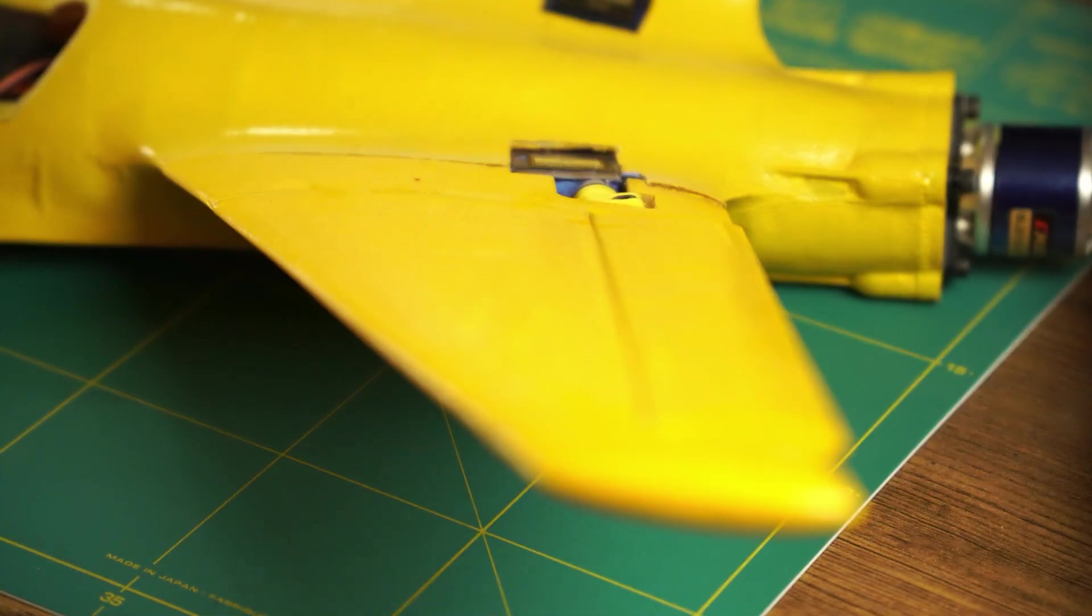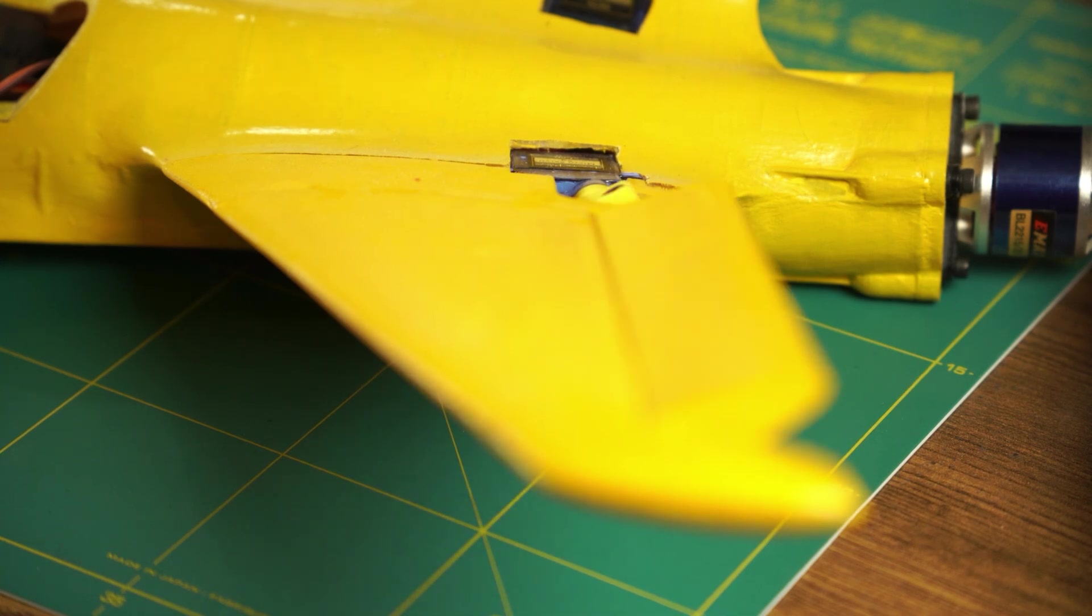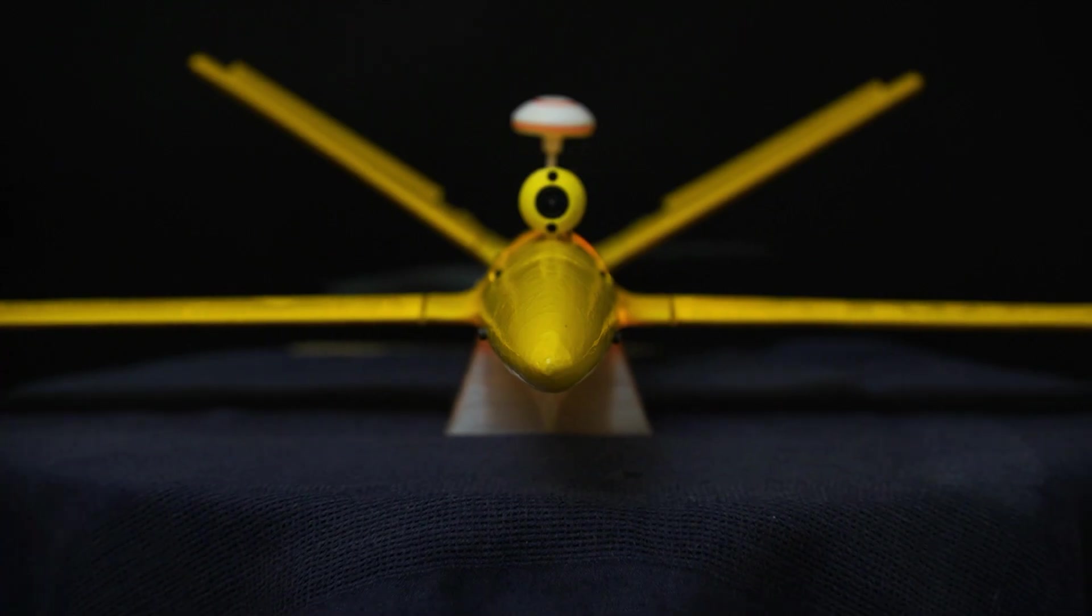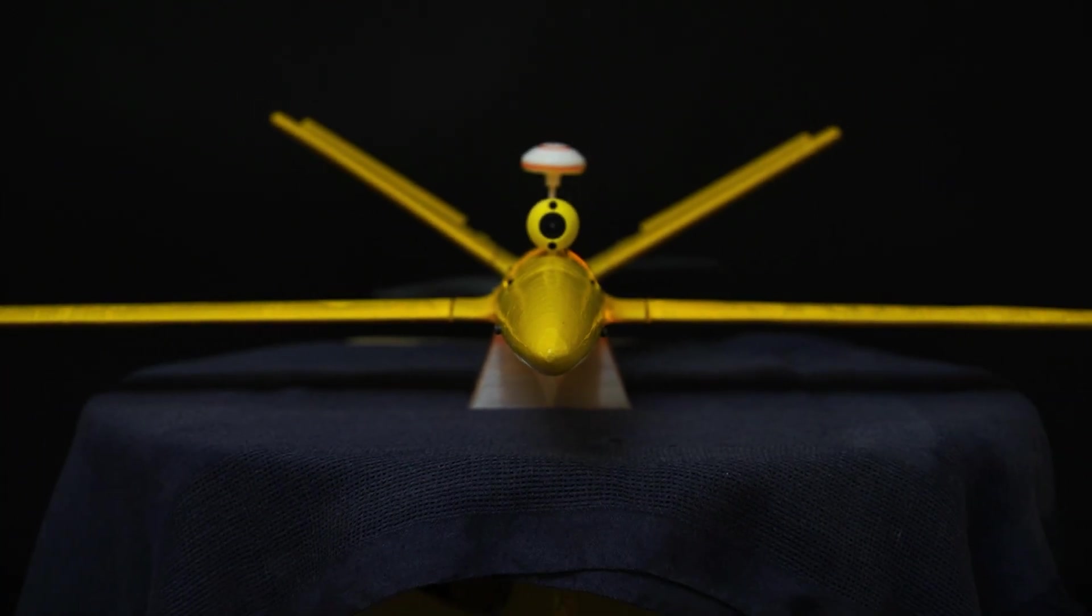This is the direct shaft coupler connection on my V-tail 3D printed RC plane project. And as you see, without any external component, it looks more professional, clean, and safe. Thanks for watching and see you in the next one.